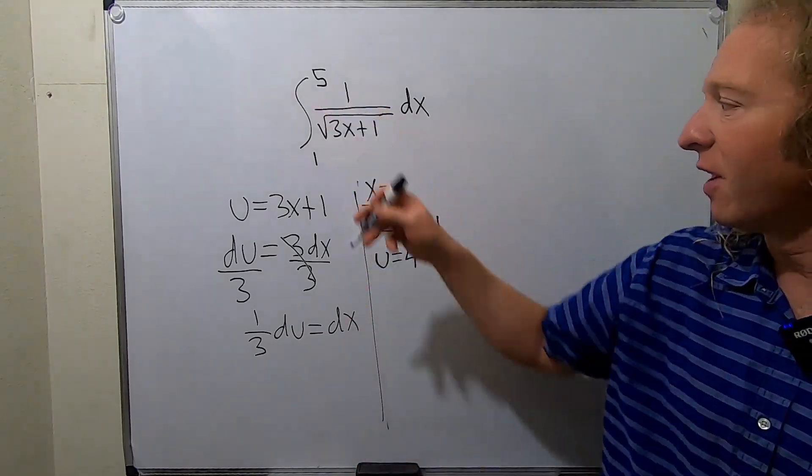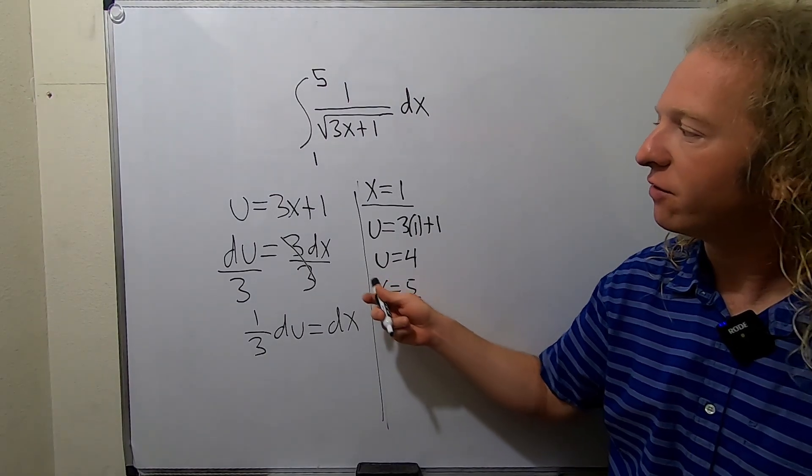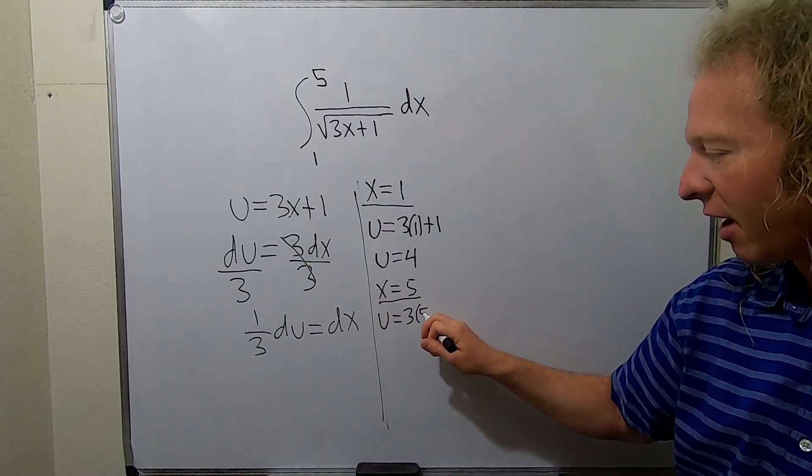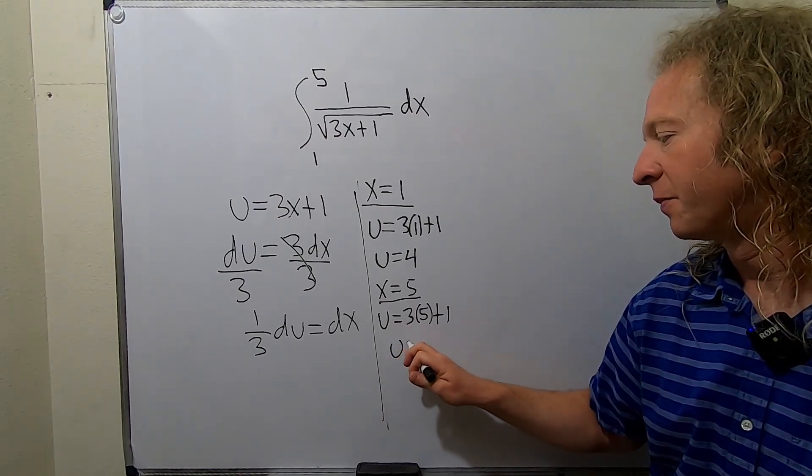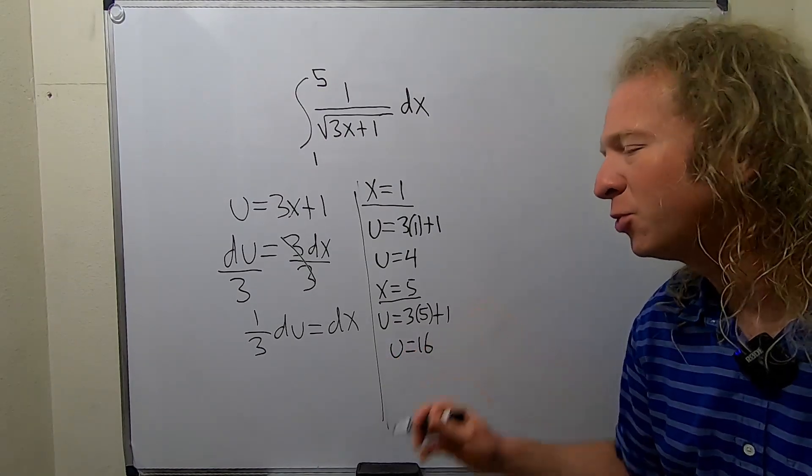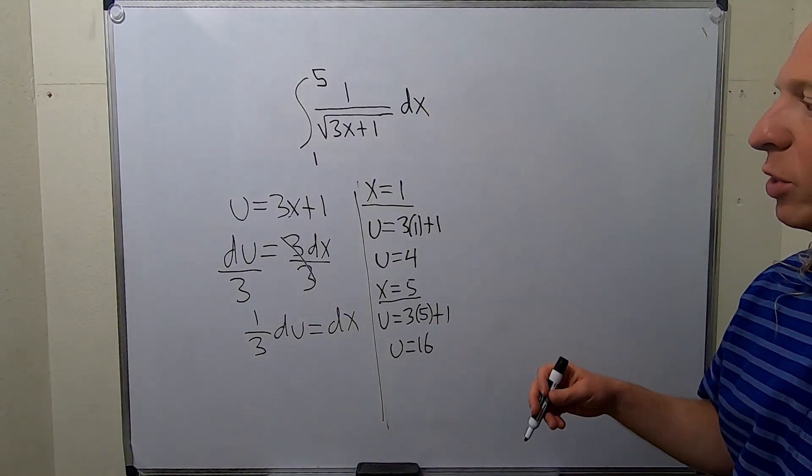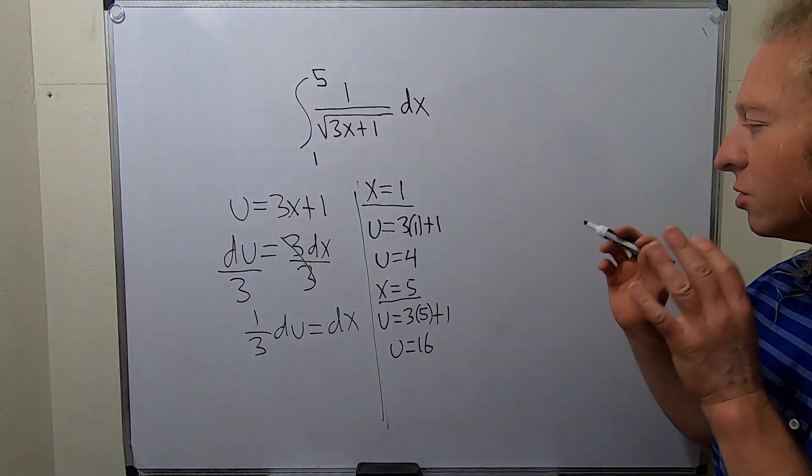And then when x is 5, we end up with, let's see, x is 5 we get 3 times 5. So u equals 3 times 5 plus 1. So you get 15 plus 1, so we get 16. This is a super important technique. I once got stuck on a math problem for over a week because I didn't do this. This was the missing step. So it's so, so important.